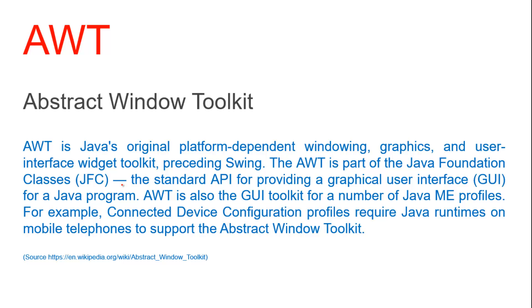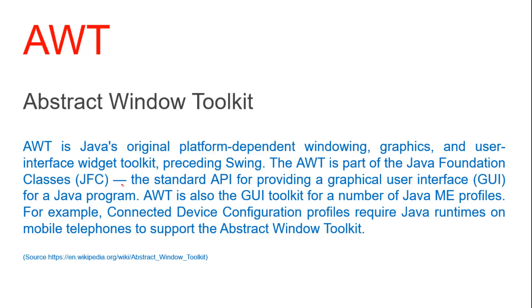AWT stands for Abstract Window Toolkit. AWT is Java's original platform-independent windowing, graphics, and user interface widgets toolkit, preceding Swing. The AWT is a part of the Java Foundation Classes (JFC), the standard API for providing a graphical user interface for a Java platform. AWT is also the GUI toolkit for a number of Java ME profiles, for example the Connected Device Configuration profile, which requires Java runtimes on mobile telephones to support the Abstract Window Toolkit.